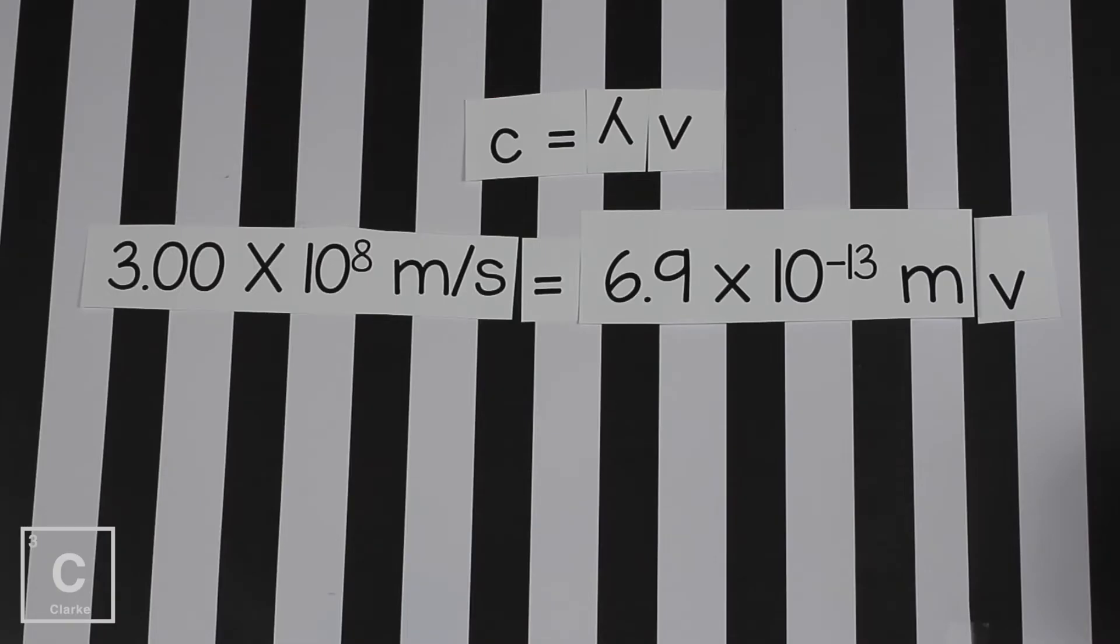So again, we're going to put our number for speed of light. 3.00 times 10 to the 8 meters per second. This time we input our number for the wavelength because that was the number given to us. And we're solving for frequency.